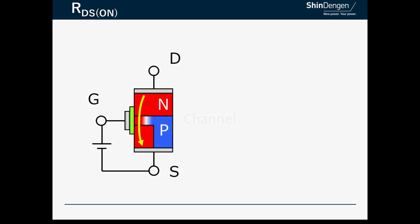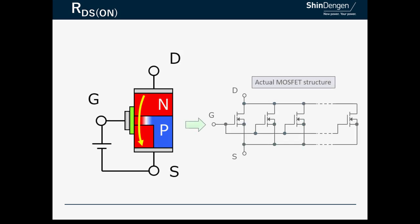An actual MOSFET consists of many such unit structures or cells connected in parallel. The more cells there are, the smaller the RDS(ON) becomes. But the larger the bare die, the higher the cost.